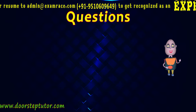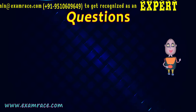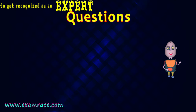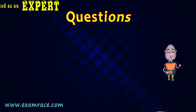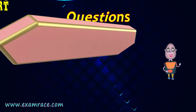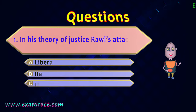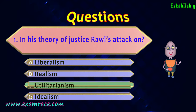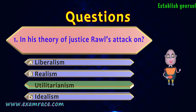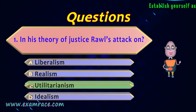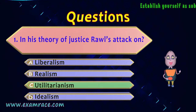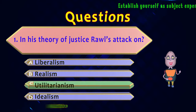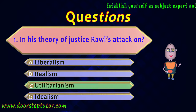This was a brief introduction and explanation of John Rawls and his Theory of Justice. Let us now take up multiple choice questions. The first question is: in his theory of justice, Rawls attacked on — the correct answer is utilitarianism. The explanation is that he argues that in calculating greatest happiness for the greatest numbers, utilitarian philosophy does not care if it leads to extreme hardship to any individual.